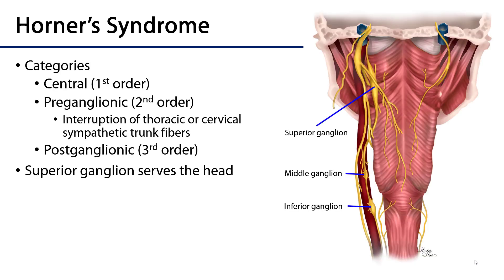Horner's syndrome may be divided into three categories depending on the neurons which are affected. It may either be central or first order if neurons in the hypothalamus or connecting to the brainstem are affected. It may be preganglionic if the fibers connecting the lateral horns or the IML out to the sympathetic trunk are affected, even if they are ascending or descending the trunk. Or they may be postganglionic or third order if the neurons from their synapse until their targets are affected.